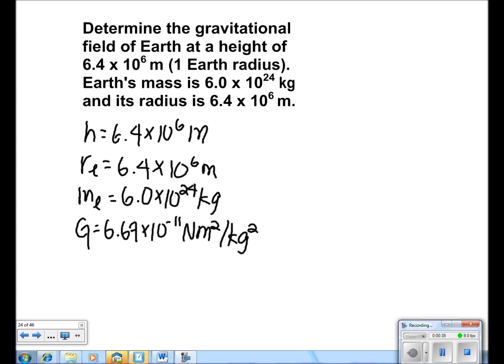We use the formula g is equal to Gm over r squared. For this problem, r is equal to the height plus the radius of the Earth. And since the height is the same as the radius of the Earth, it is 2re.